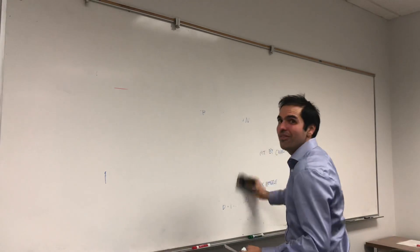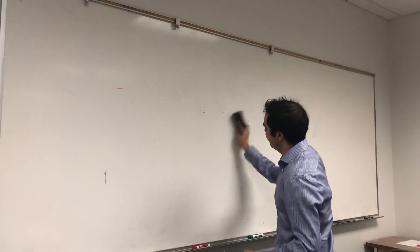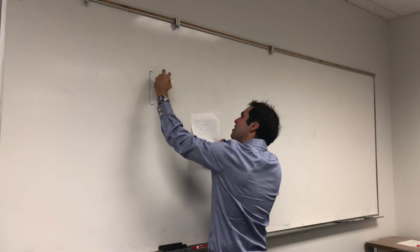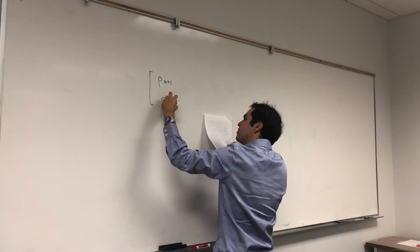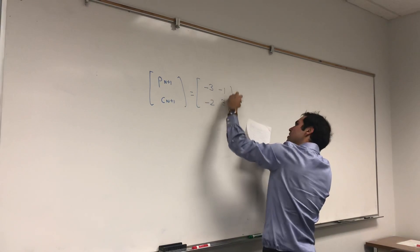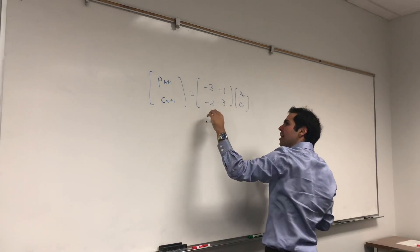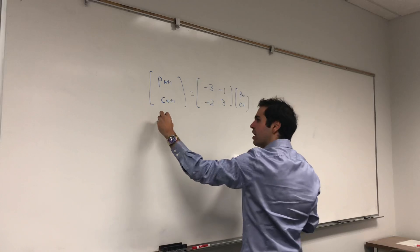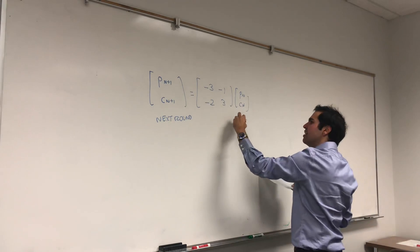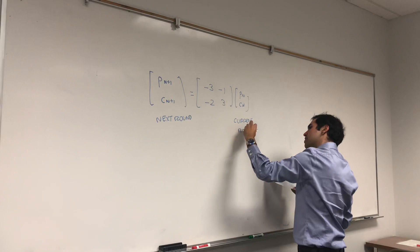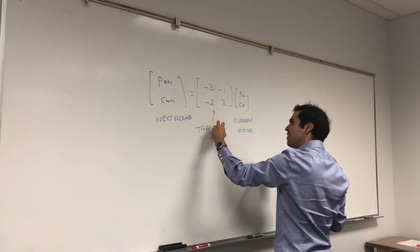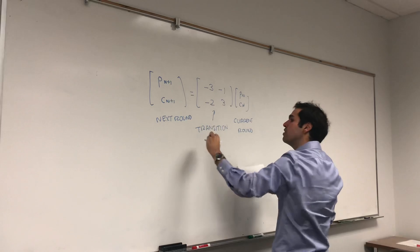But really, I mean, the main thing is finding a formula for the two. Okay, well, turns out, first of all, you can rewrite this system in matrix form, so PN plus 1 and CN plus 1. It's simply minus 3, minus 1, minus 2, 3, PN and CN. So, what this tells us is that in the next round, here is how the HPs in the next round are related to the HPs in the current round. And they're related by this thing, which is called the transition matrix. It's literally the thing that helps us transition from the current round to the next round.